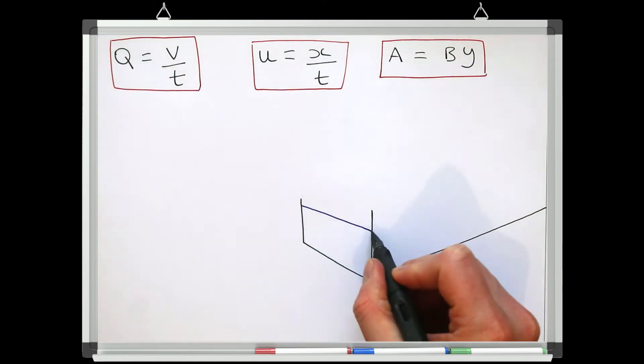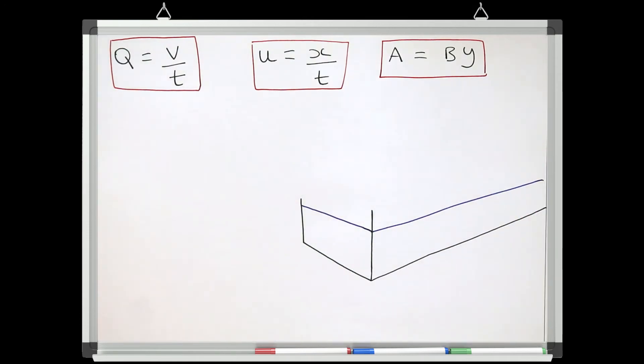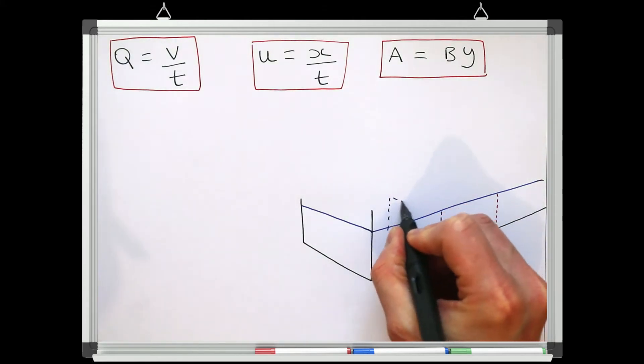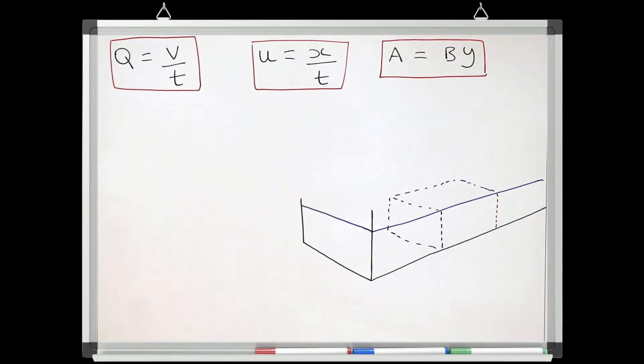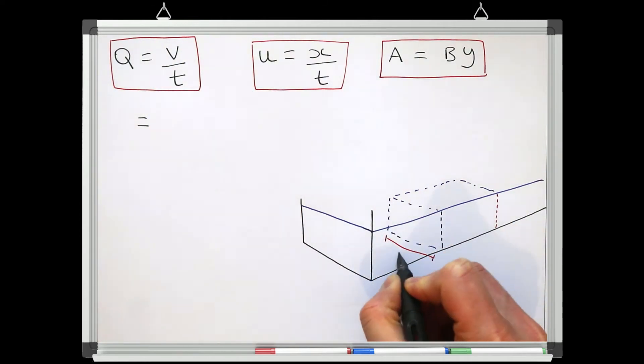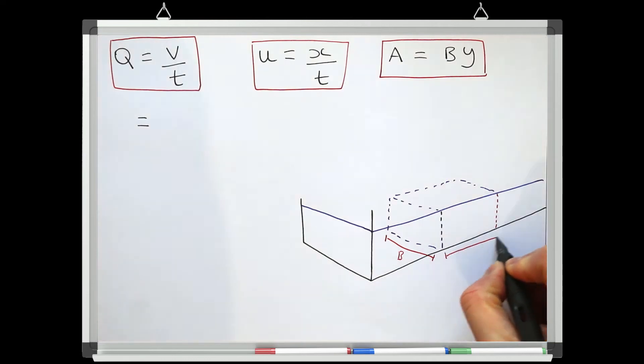So the discharge is how much water has passed a certain point in a certain period of time. Imagine for a moment what that would look like in a flow. We can do that by considering the volume of water passing the dashed red line in the diagram. How would we calculate the flow from this diagram? It would be the volume over time, and the volume that has passed the red dashed line is the width of the channel, times by the length of the volume that has passed the red line, times by the flow depth.